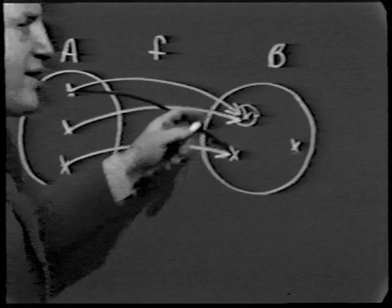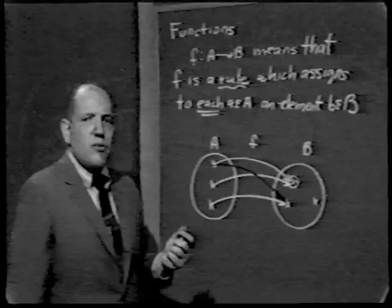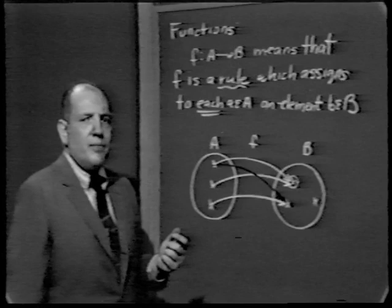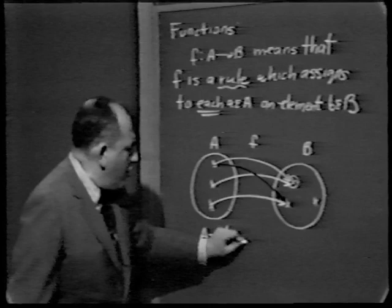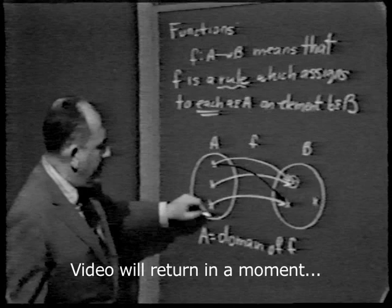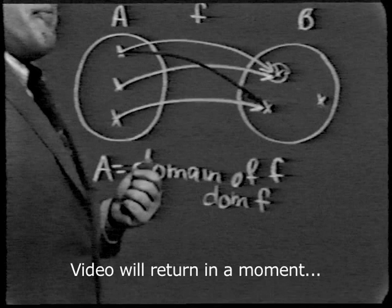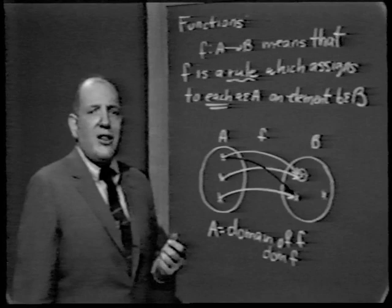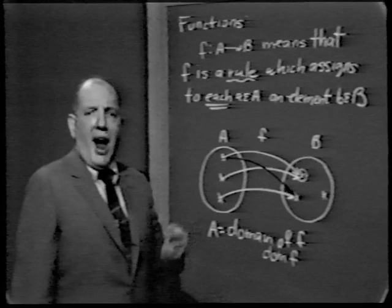This leads to three different terms we should define. The set A is called the domain of f — this is what f is defined on, often abbreviated as dom(f) or with a capital D subscript f. The domain of f is the set A: it's the set on which f operates to assign values.